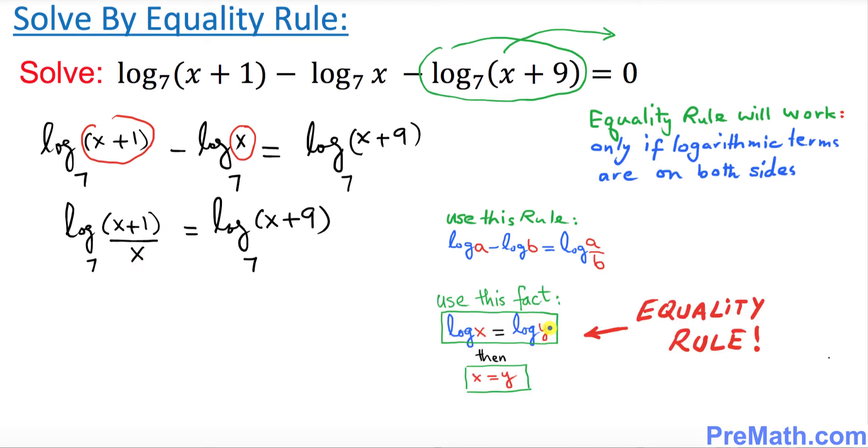Now finally we will be using this equality rule to use this fact that if you have log(x) equal to log(y) then you can cancel out log on both sides and get x equals y.